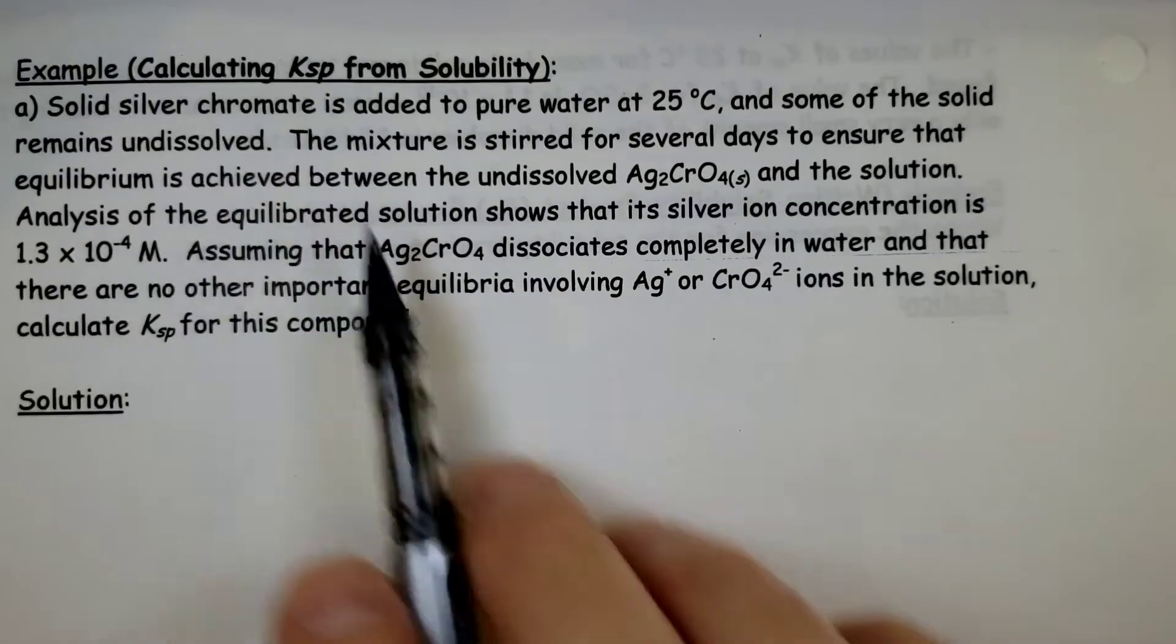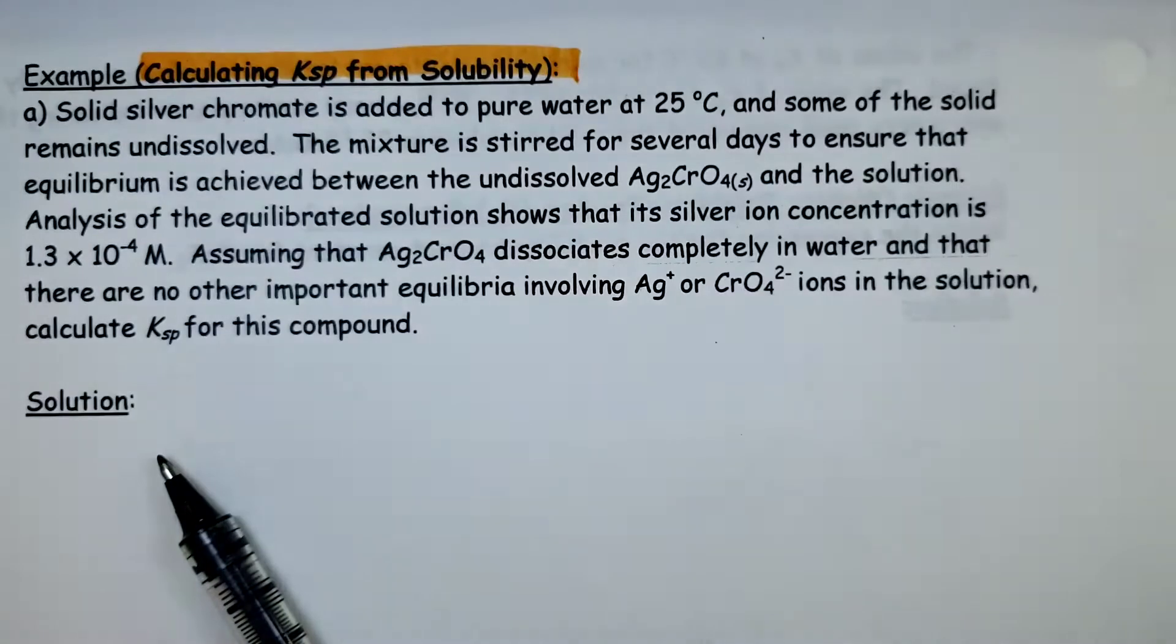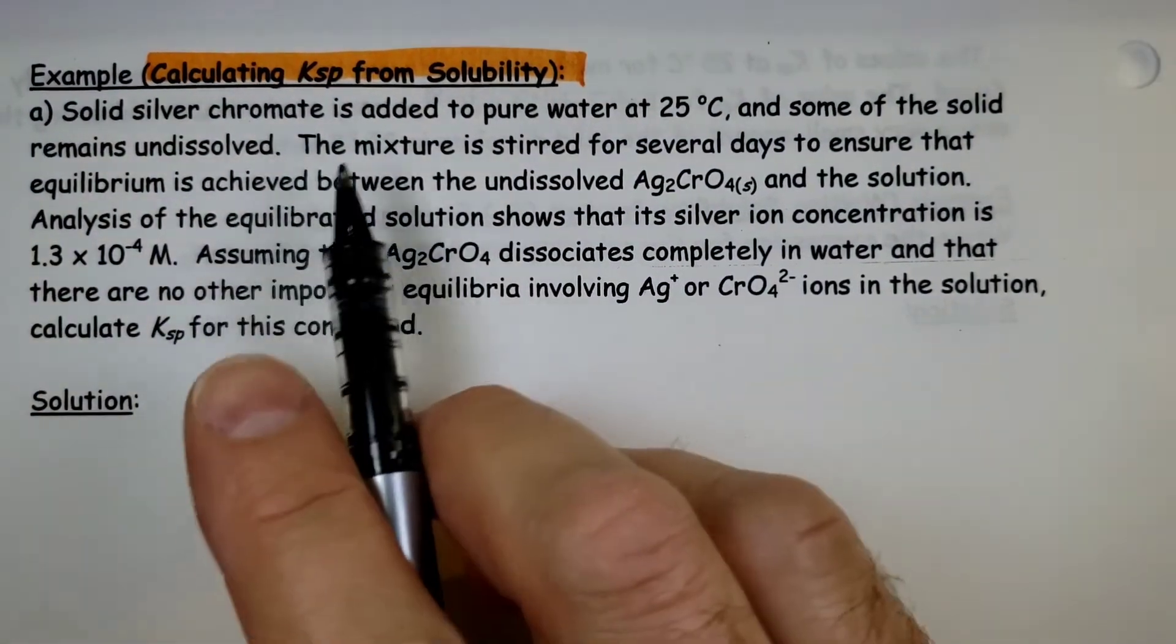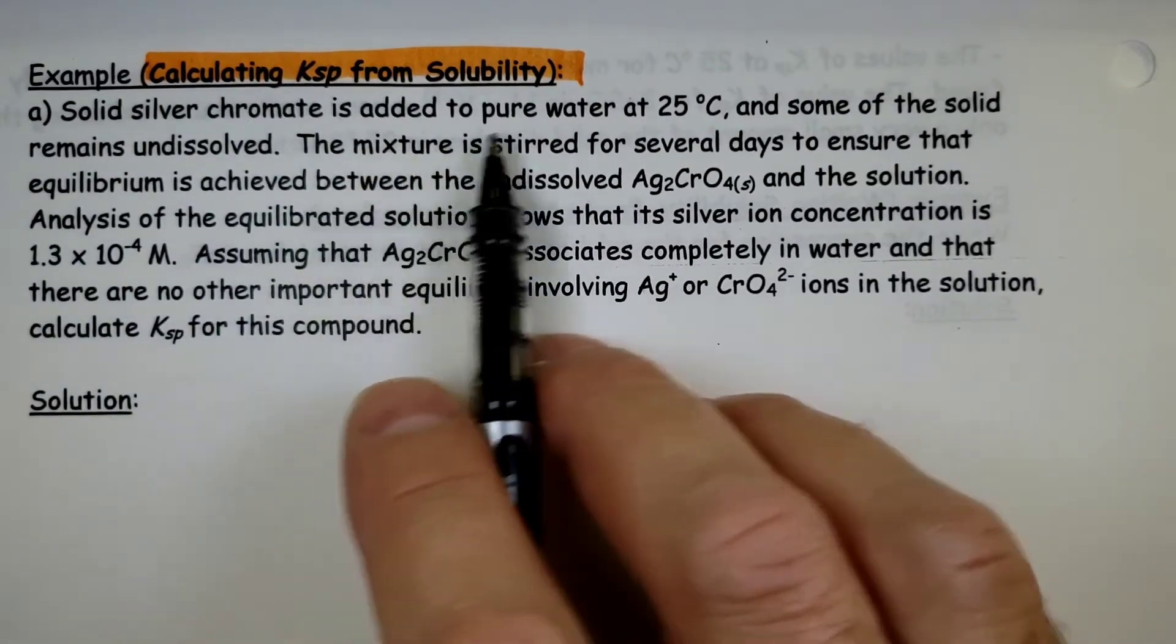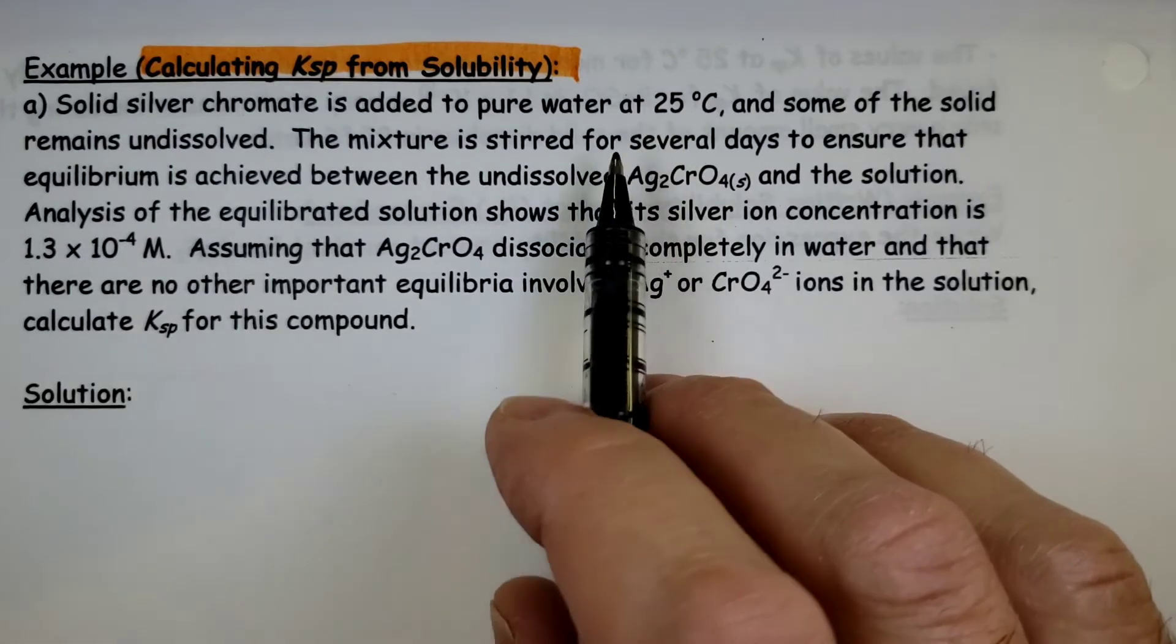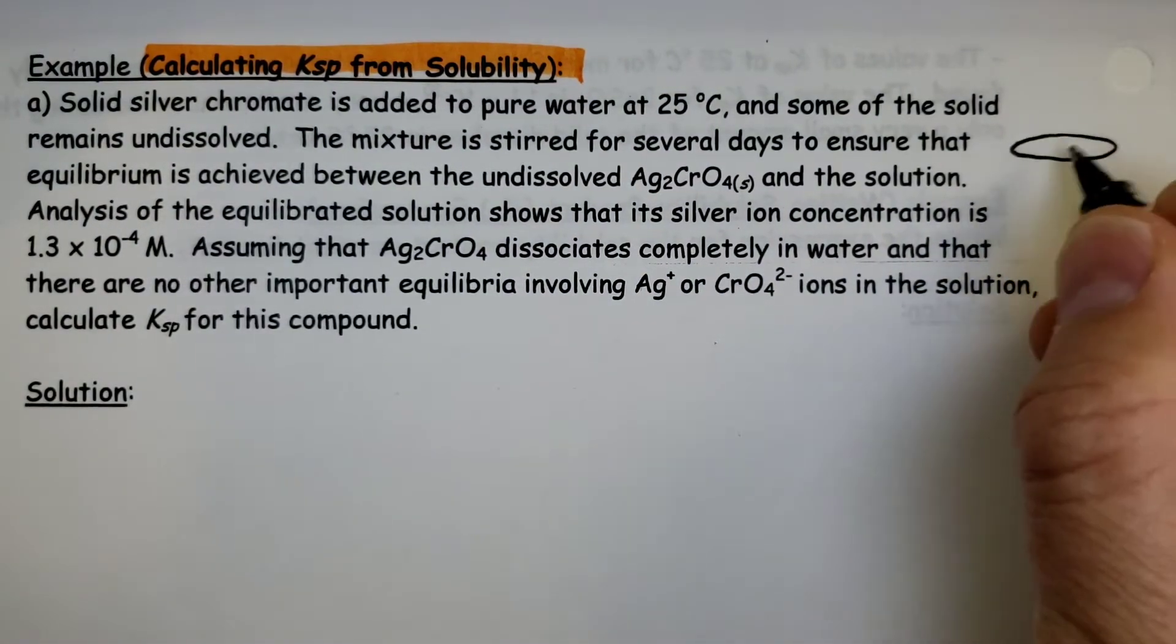Here we'll look at calculating the Ksp if we know the solubility. Solid silver chromate is added to pure water at 25 degrees C and some of the solid remains undissolved. What that means is that we've reached a saturated solution.